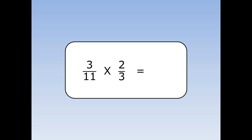Three elevenths times two thirds. I've got a 3 on the top and a 3 on the bottom, so I'm going to divide them both by 3. 3 divided by 3 is 1, and then I continue as normal. 1 times 2 is 2, and 11 times 1 is 11.